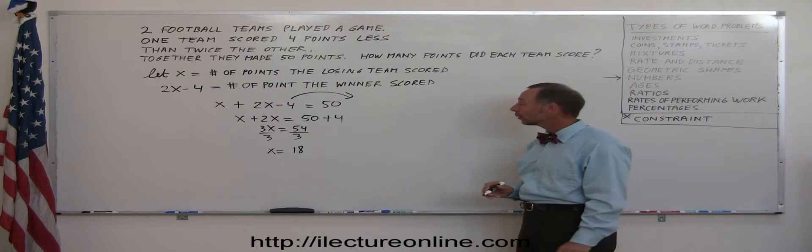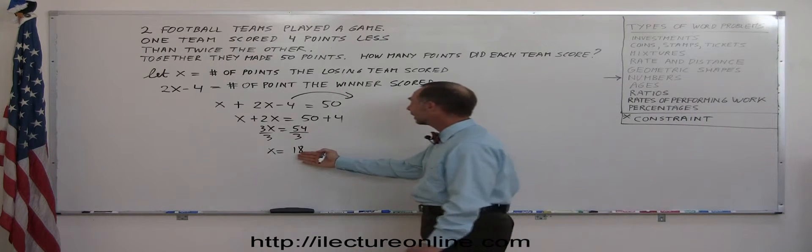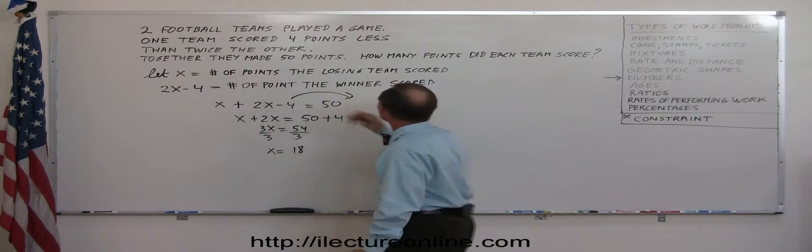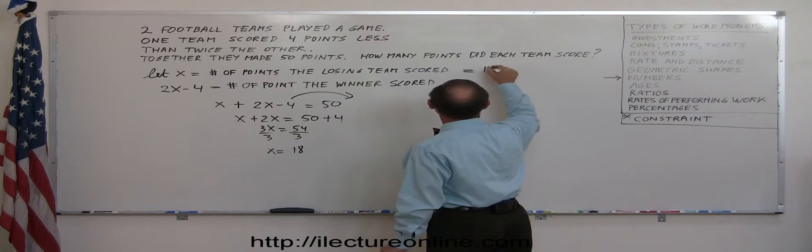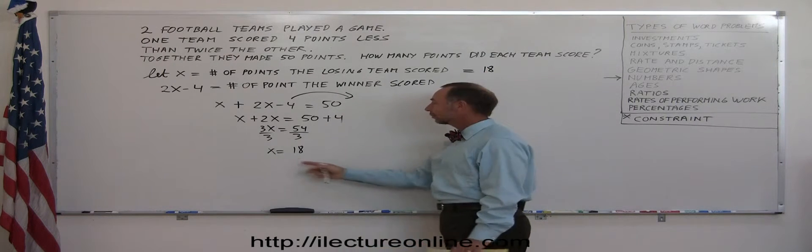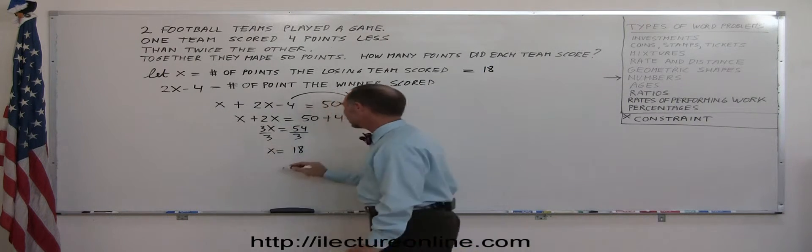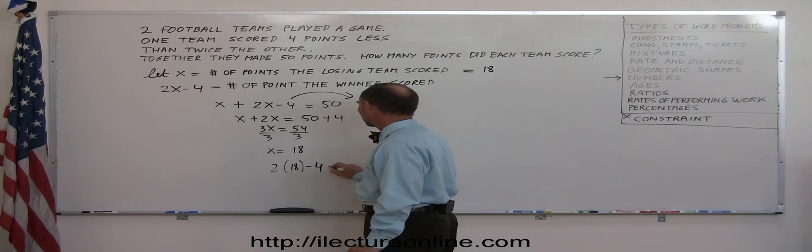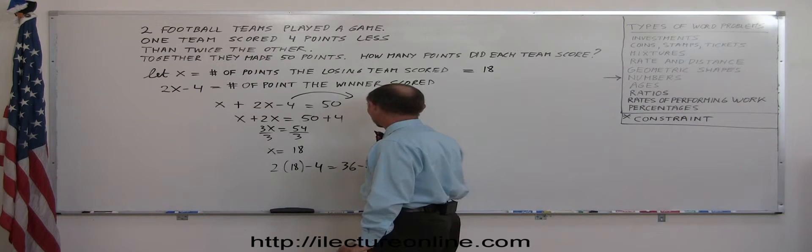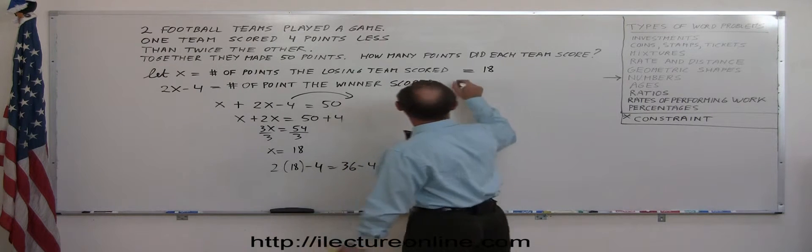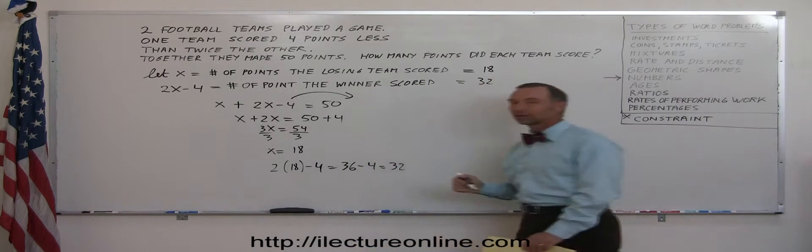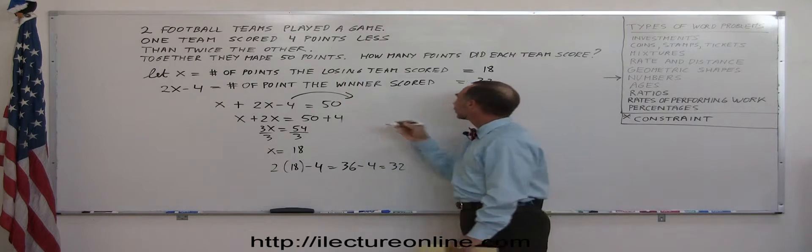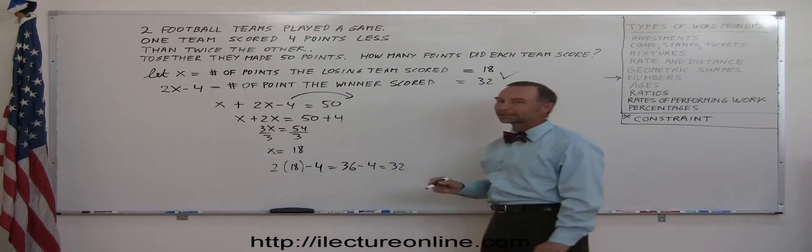Okay, now did we find the right quantities? We assume that 18 is the number of points the losing team scored. And if we double that, 2 times 18, so 2 times 18 minus 4, that would be 36 minus 4, which is 32. That would be the number of points the winning team scored. And if we add them together, sure enough, we get 50. So the answer seems to be correct.